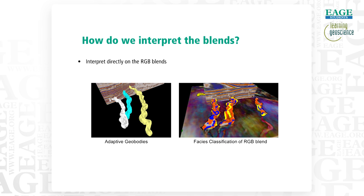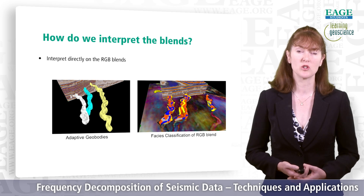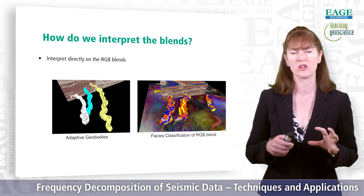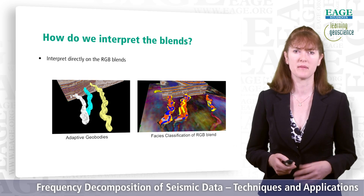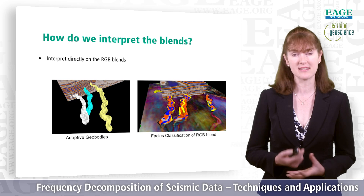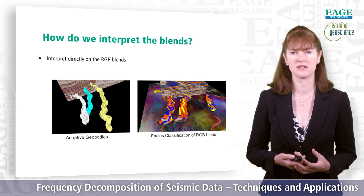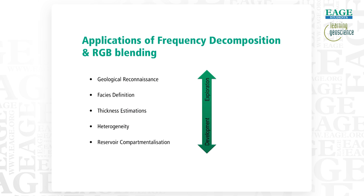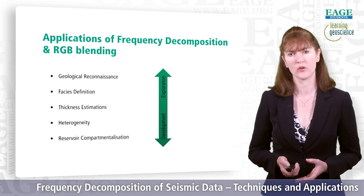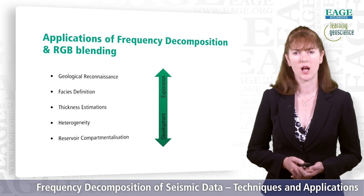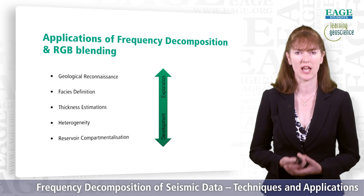It's important that we don't just look at the RGB blends and leave it there. There are tools available that allow us to interpret directly on the RGB blend, to extract adaptive geobodies showing the morphology — giving us a 3D interpreted object of those channel features and volumetrics. We can also do facies classifications directly on the RGB blend, looking at the variability of the classes and the frequency response to pull out individual facies based on the seismic response. Frequency decomposition and RGB blending are applicable at all stages of the interpretation cycle, through exploration, appraisal, development, and production.